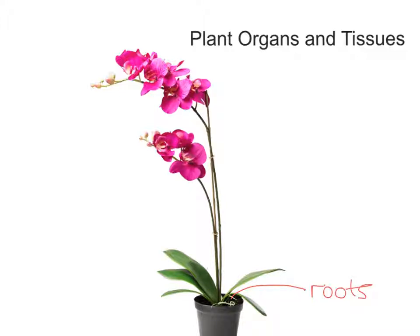Going higher up, we've got another particular organ and that's the stem. Now if you look at the stem in cross section you'll see xylem and phloem. Xylem and phloem form part of the vascular bundle, or the veins, and they're designed to carry water up the plant and sugars — food, if you like — up and down the plant in both directions. And that's the job of the stem, to allow movement of water and sugars throughout the plant as required.